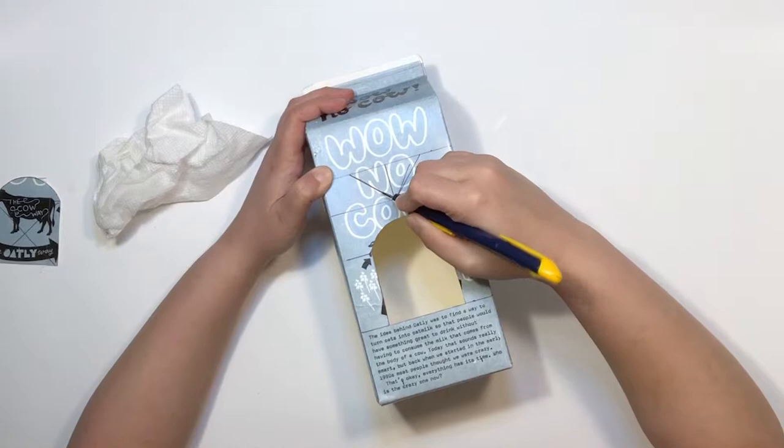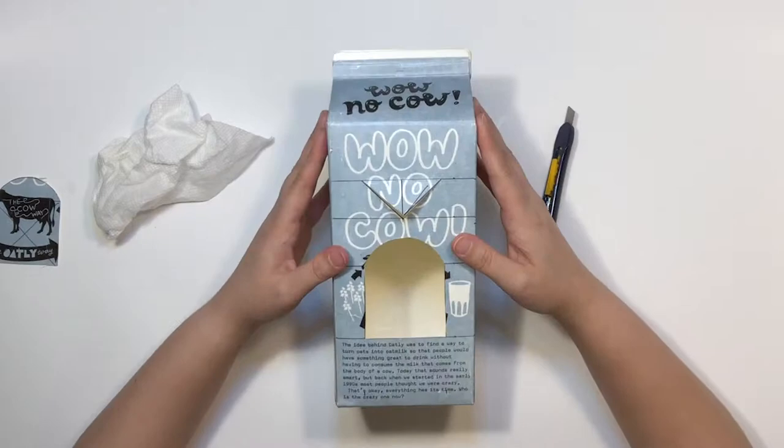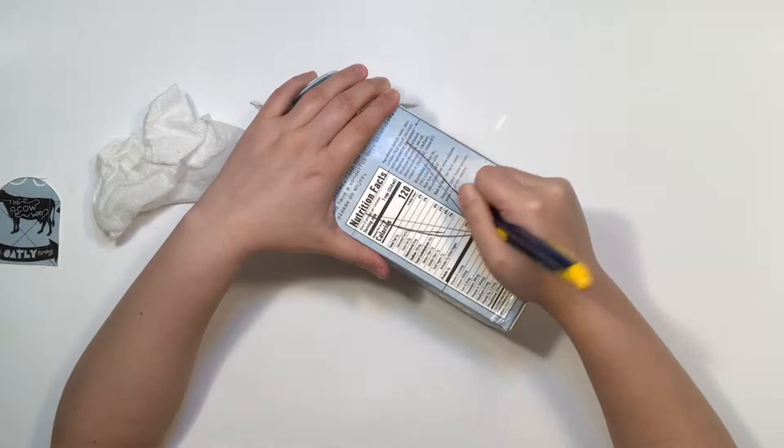Next, cut out the beak but remember to not cut the top section. You want to gently lift and fold the beak so that it sticks out at an angle. Repeat the same process with both wings.